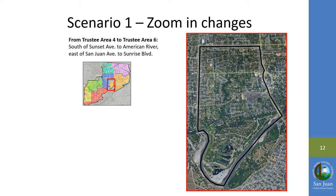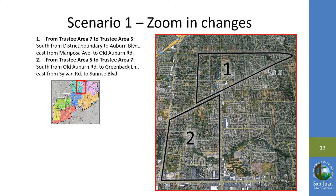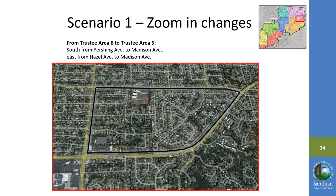Next, we see the area shifted from Area 4 to Area 6. This includes the area going south of Sunset Avenue to the American River and going east of San Juan Avenue to Sunrise Boulevard. Here we have the area shifted from Area 7 to Area 5 and vice versa. The first area includes going south from the district boundary to Auburn Boulevard and east from Mariposa Avenue to Old Auburn Road. The second area includes going south from Old Auburn Road to Greenback Lane and east from Sunrise Boulevard to Sunrise Boulevard. Lastly, we have the area shifted from Area 6 to Area 5, including the area going south from Pershing Avenue to Madison Avenue and going east from Hazel Avenue to Madison Avenue.